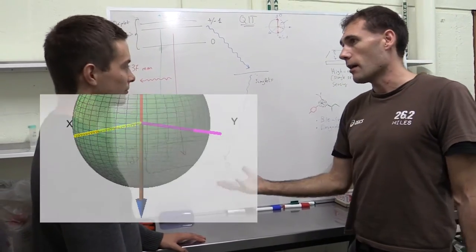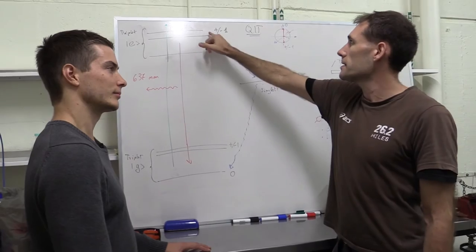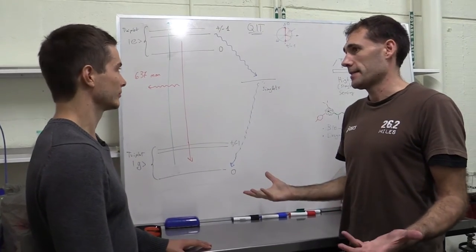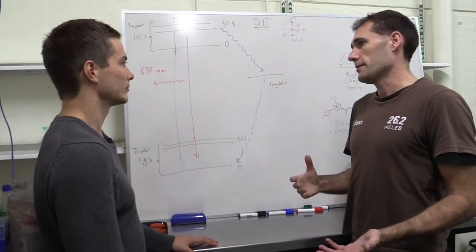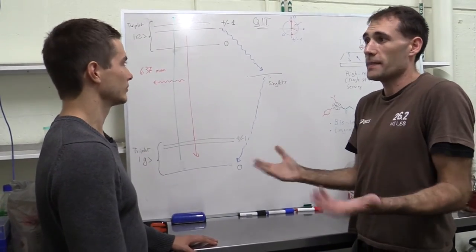And you can also do the readout optically because this level fluoresces less. So you know which state you start from, if you're a zero or one, which makes a perfect qubit.